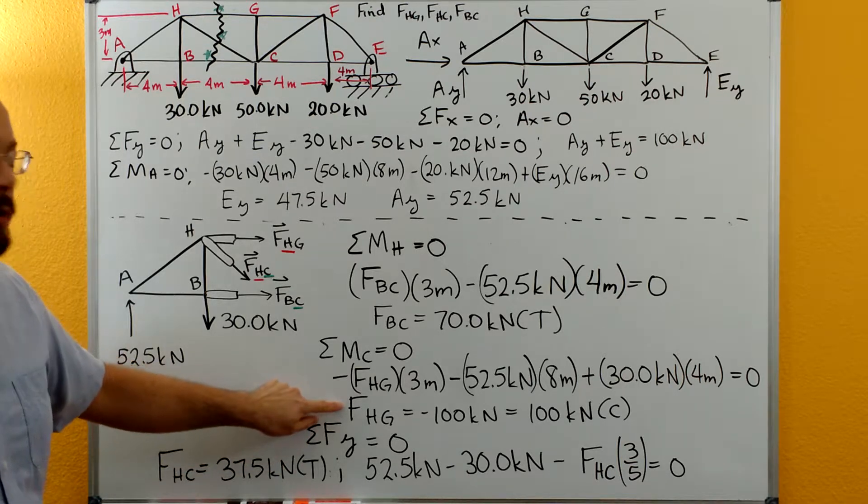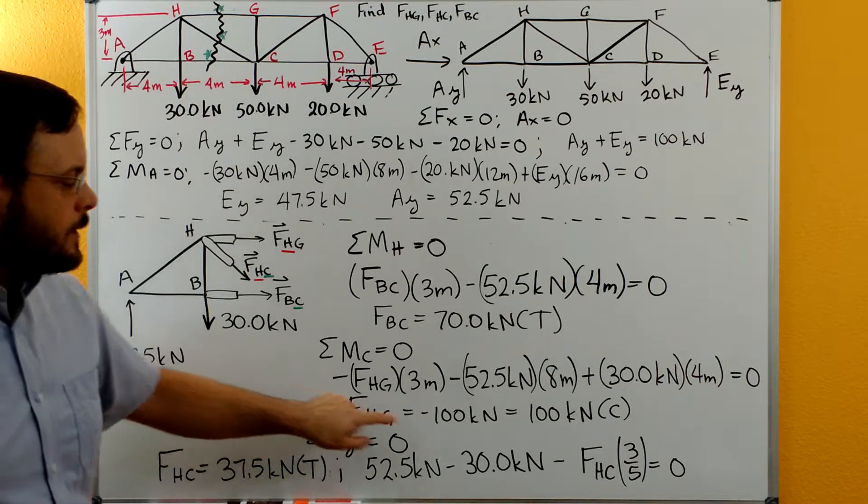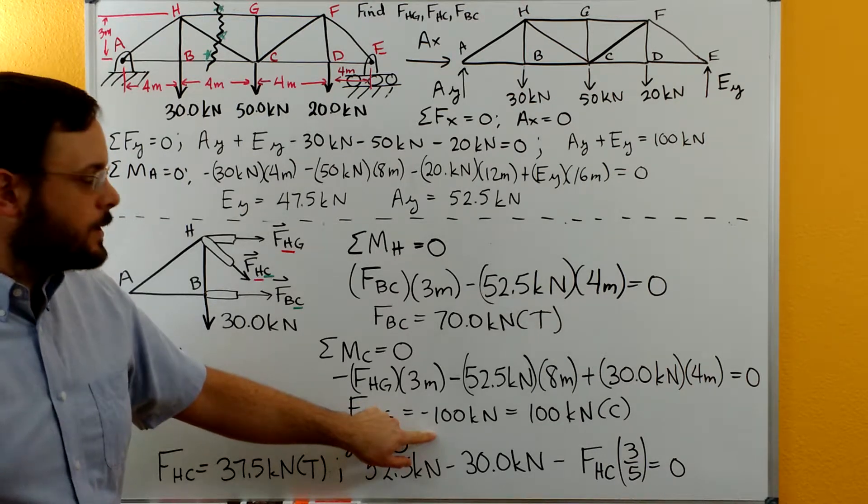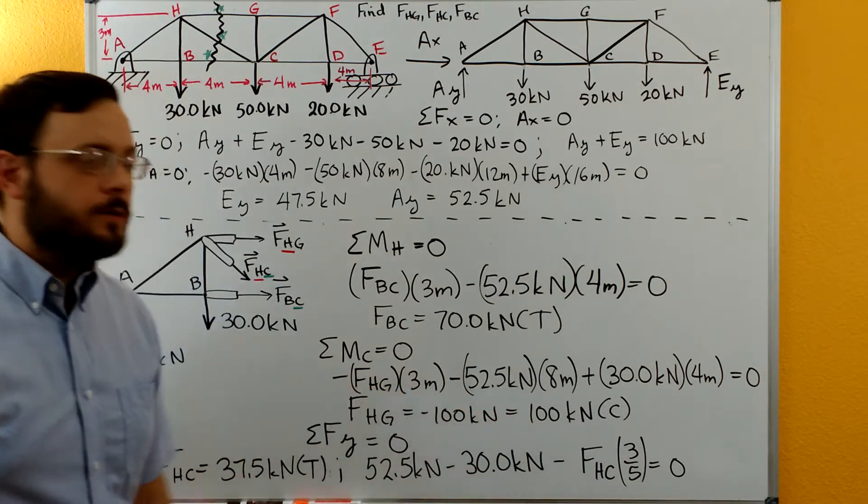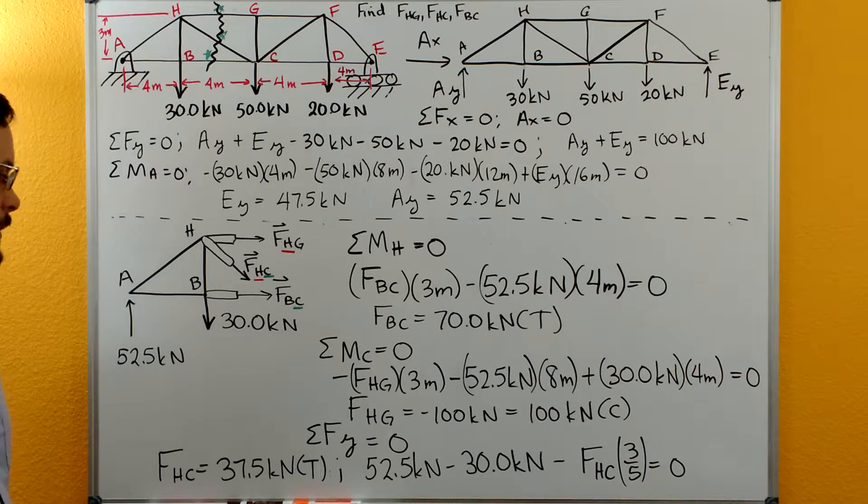We'll solve for FHG as our only unknown. We get negative 100 kilonewtons, so it must have been 100 kilonewtons in compression since we got a negative number.